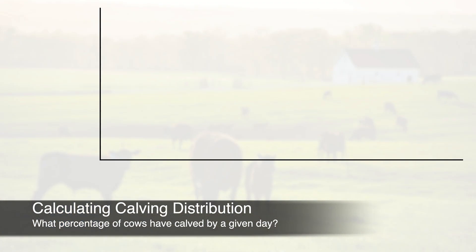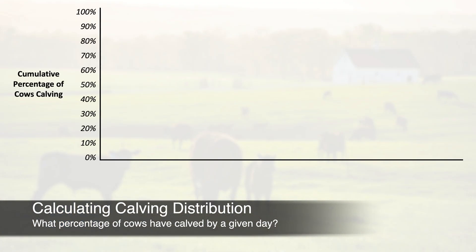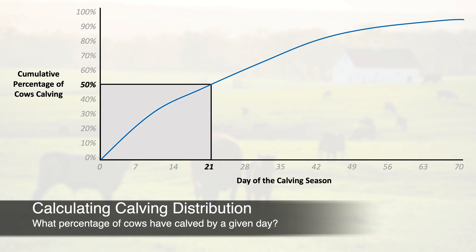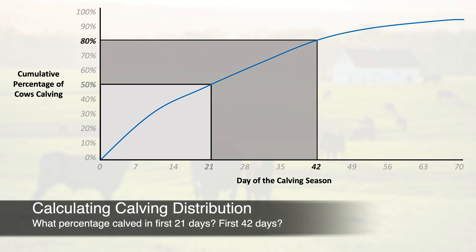Calving distribution refers to the percentage of cows calving by a given day of the calving season. You can calculate this for any day of the calving season, but a helpful metric is to use days that correspond to the length of the estrous cycle, which is 21 days long. So for example, what total percentage of cows have calved by day 21? What about day 42?